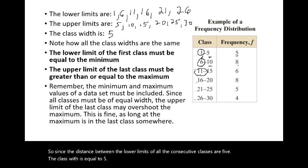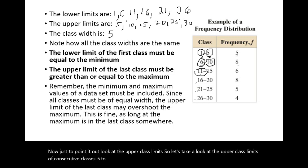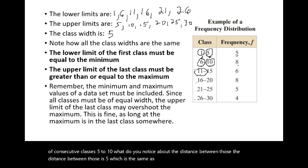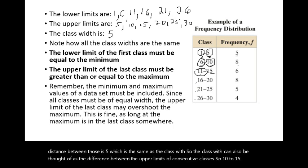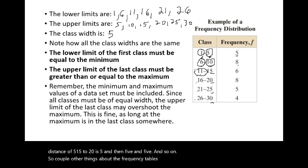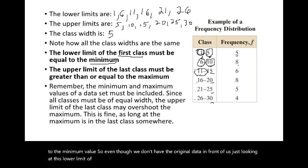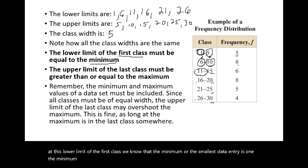You can also verify the class width using the upper class limits of consecutive classes. From 5 to 10, 10 to 15, 15 to 20 — all differences are 5, confirming the class width. Also, the lower limit of the first class must equal the minimum value, so just by looking at this table we know the minimum data entry is 1.